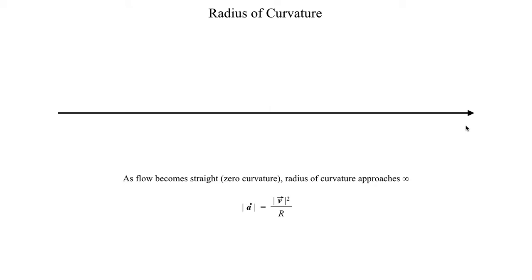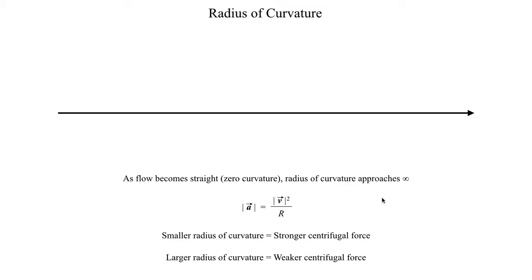Mathematically this checks out: if we have a perfectly straight flow pattern then we have an infinite radius of curvature, meaning r in the denominator is infinity. As r approaches infinity the entire term approaches zero, meaning zero centrifugal acceleration — which is exactly what we expect from a straight flow pattern. To reiterate: small radius of curvature gives a stronger centrifugal force; large radius of curvature gives a weaker centrifugal force. If r is small the denominator is small so the value is larger, and if r is large the denominator is large so the value is smaller.